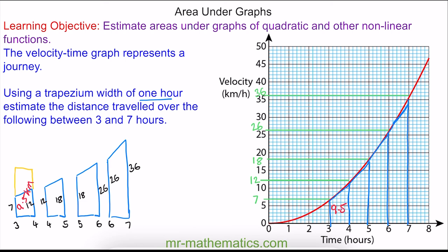For our second trapezium, the rectangle would have an area of 30 kilometres. So the trapezium has an area of half of that, which is 15 kilometres. Our third one is 22 kilometres. And finally, between 6 and 7 hours, we have an area of 31 kilometres. So the approximate total distance travelled between 3 and 7 hours is 77.5 kilometres.